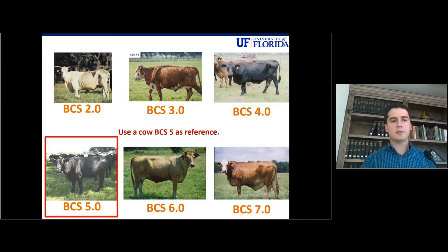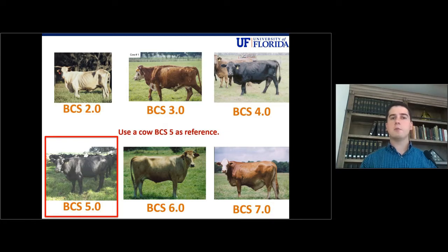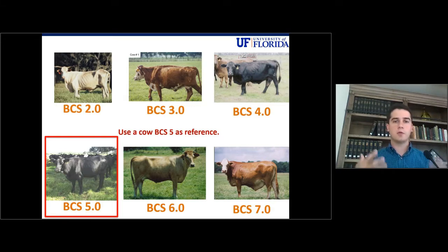Now let's move up in the scale. At body condition score 6: you don't see the ribs, you don't see the backbone, and the tail head is full but not excessive yet. At body condition score 7, you will see an excessive amount of fat in the tail head and the cow will look like a block. Those are the main characteristics — use them to create this image in your mind as a reference.